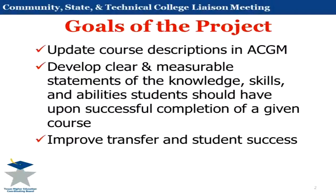Especially when you're talking academic transfer, we collectively want to be sure that if students come and they take English 1301 at Amy's institution, Joe Carroll's institution, or Jerry's institution, they should all get pretty much the same course. They should all achieve the same competencies and skills so that when they go on and take sophomore-level literature courses at some other institution or at a public university, we know that that student has the writing skills they need to succeed. That's what the learning outcomes are really all about.